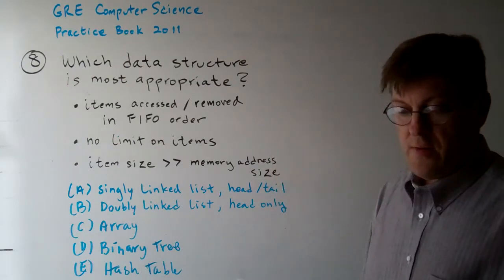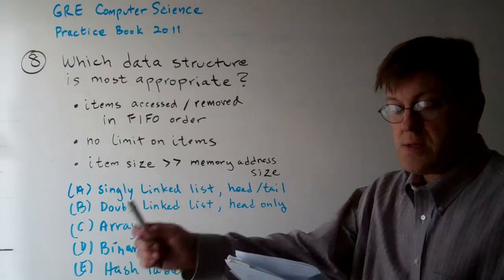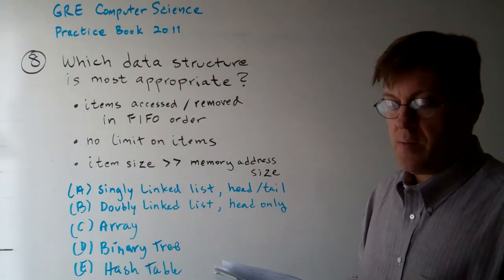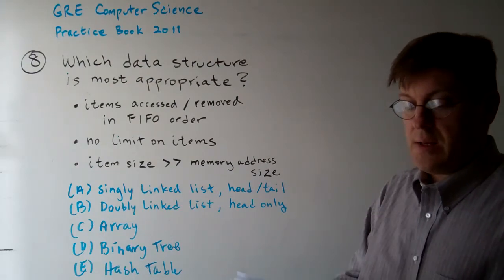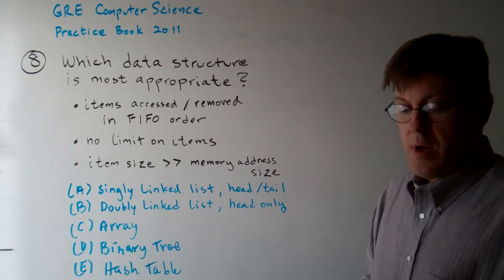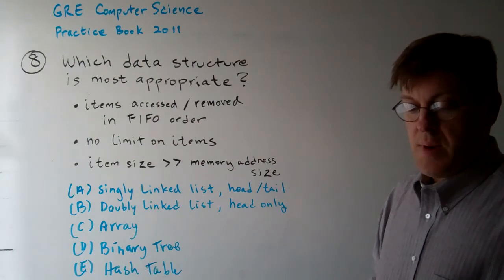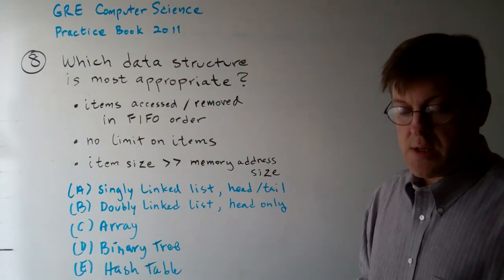We have option A, singly linked list with head and tail pointers. B, doubly linked list with only a head pointer. C, array. D, binary tree. And E, hash table.